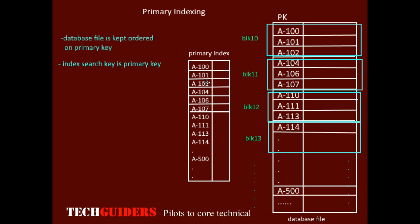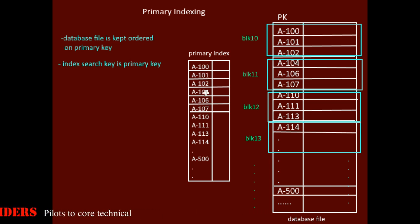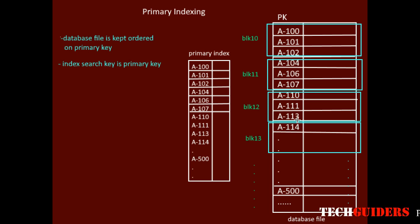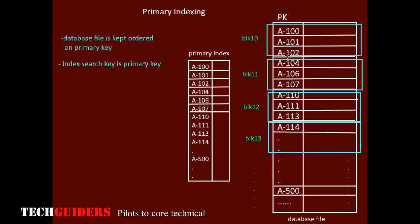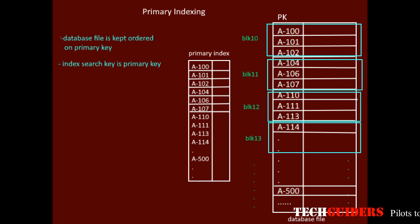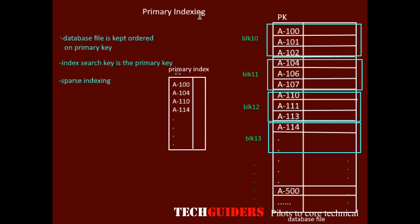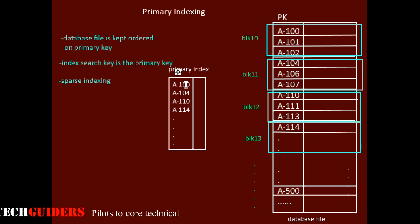This indexing can be dense as well as sparse. In dense indexing, we create an index entry for each and every record of the file. But since the records are kept physically sorted on the primary key, whose value is unique for every record, there is no need to create an index entry for each record. Hence, sparse indexing is usually used.